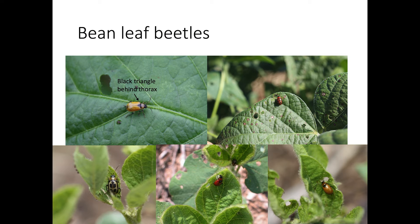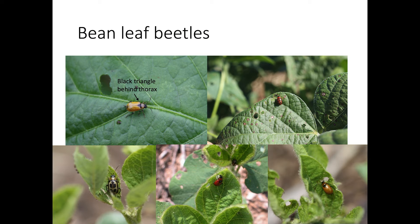Bean leaf beetle is also a vector of bean pod mottle virus. Among other symptomology, this virus may cause green stem syndrome, where the soybean stem stays green even after the plant and seed has matured, which may make harvest more difficult. However, economic loss from this virus is rarely a major concern in Tennessee soybeans. Japanese beetles feed on over 300 different plants, and soybeans are one of them. Adults are oval-shaped with a bright metallic green head and thorax with copper-colored hardened wings and a row of five spots of white hairs on each side of the abdomen below the wings.